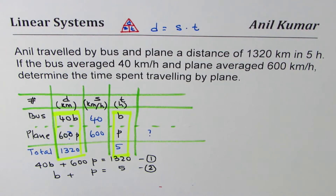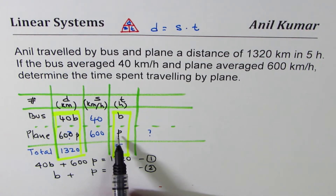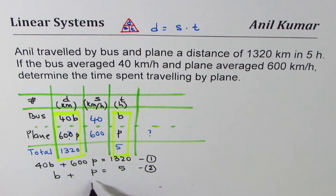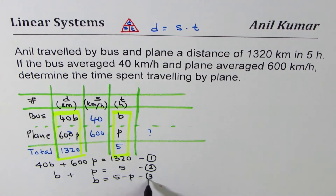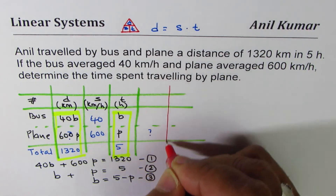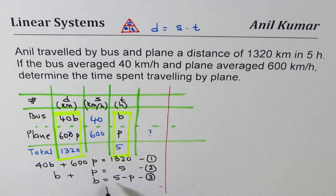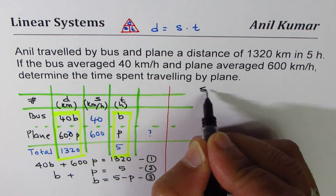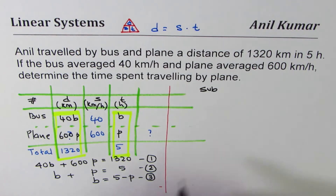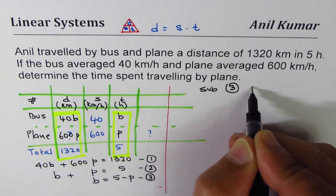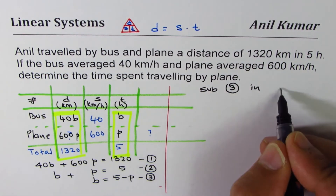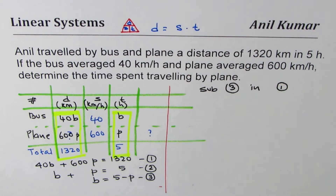We'll use the method of substitution. Since we want the value of P, I'll write B in terms of P. From equation 2, we can say B equals 5 minus P — we'll call this equation 3. Now let's substitute the value of B, that is equation 3, into equation 1.